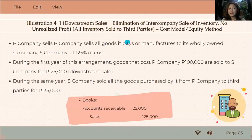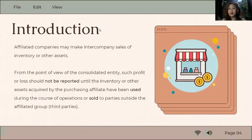We have an example under illustration 4-1. This is a downstream sale. Before that, we need to understand what is downstream and upstream sales. Downstream is, as the word itself suggests, from the parent going to the subsidiary.